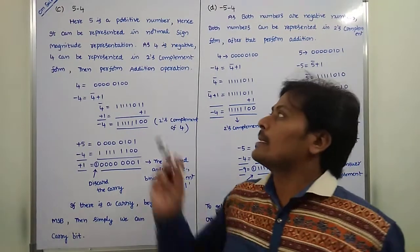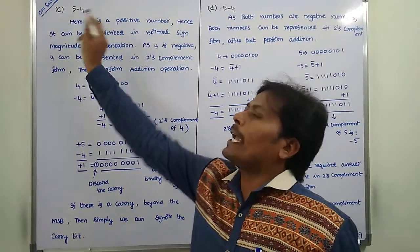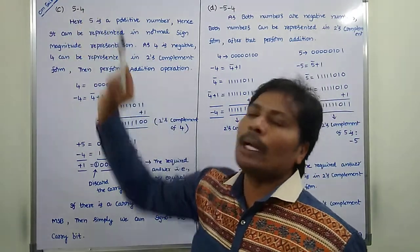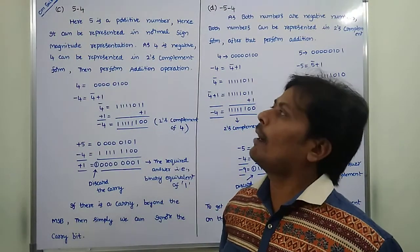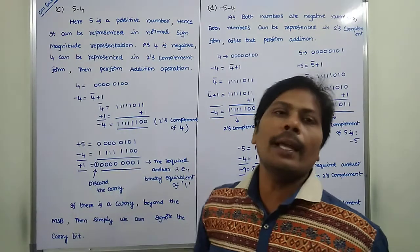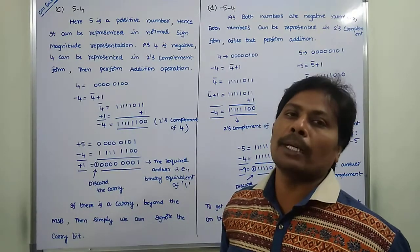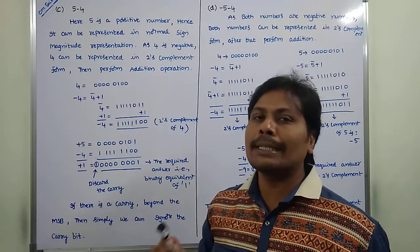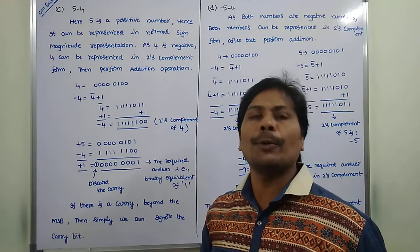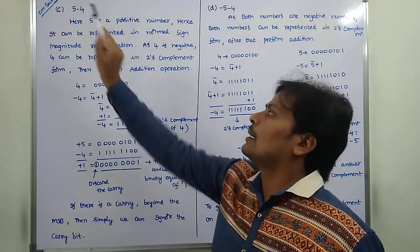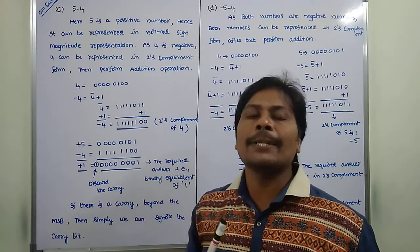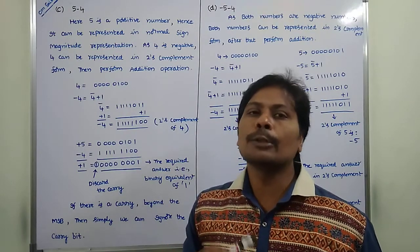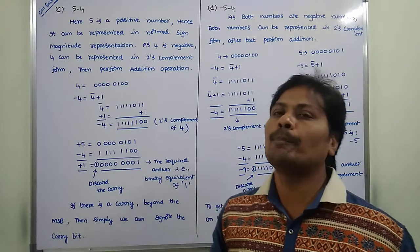The next problem is 5 minus 4. Here one number is a positive number and another number is a negative number. The positive number 5 can be represented in sign-magnitude representation. The negative number minus 4 can be represented in two's complement form.